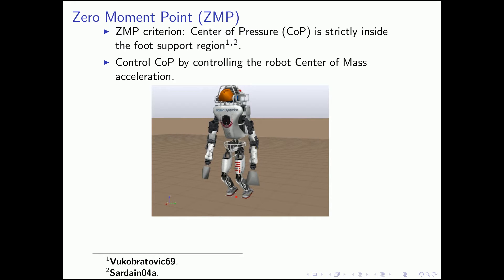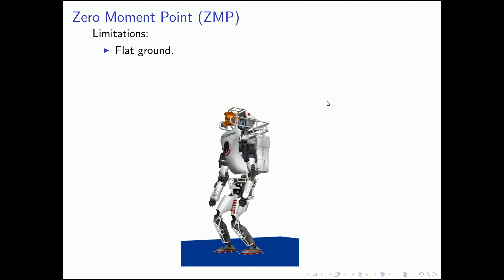There has been a lot of work to plan robust motion using the zero-moment point idea. Although widely used, zero-moment point has some severe limitations. First, it assumes that the ground is flat; otherwise the foot-support region is not well-defined. Moreover, it can require unbounded tangential friction forces. When there exist friction cone constraints, the ground contact force can lie outside of the friction cone. When this happens, the foot can slide and the robot might fall over, as we will see shortly.